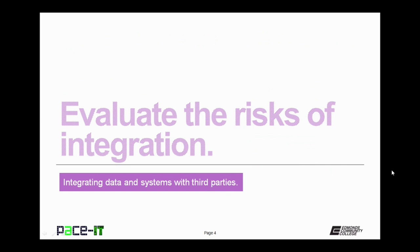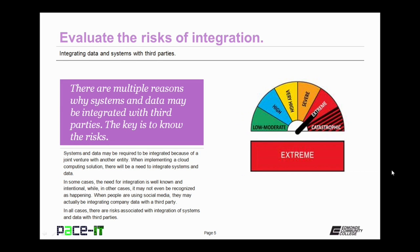I'm going to begin by talking about the need to evaluate the risks of integration. There are multiple reasons why systems and data may be integrated with third parties, and the real key is to know the risks associated with that integration. Systems and data may be required to be integrated because of a joint venture or when implementing a cloud computing solution. In some cases the need for integration is well known and intentional, while in other cases it may not even be recognized — for example, when people use social media they may actually be integrating company data with a third party. In all cases there are risks associated with the integration of systems and data with third parties.